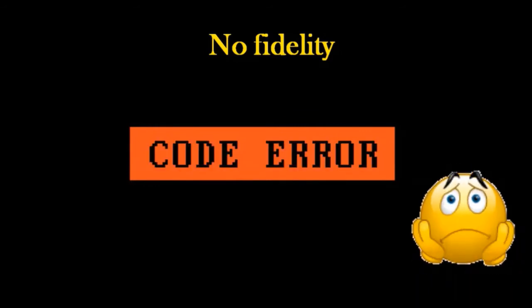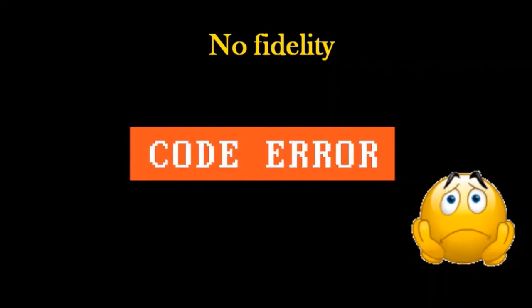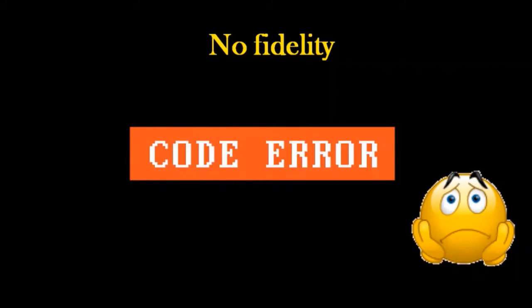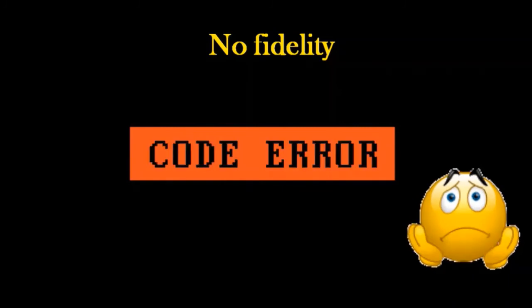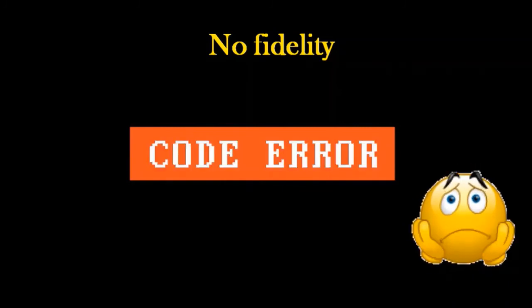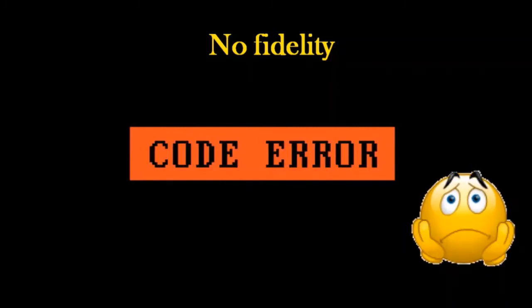RNA polymerase has no exonuclease activity, so there is no proofreading. Hence fidelity is less. Mistake rate in mRNA transcription is 10 to the 4th or 10 to the 5th times more than DNA replication. But these mistakes are not inheritable.